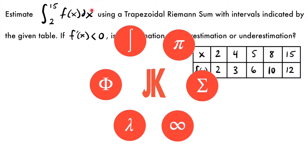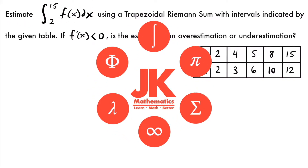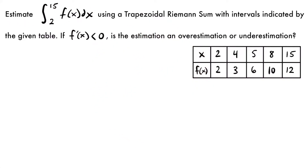We want to estimate the definite integral from 2 to 15 of a function f of x using a trapezoidal Riemann sum with intervals indicated by the given table. Additionally, we want to know that if the first derivative of the function is less than 0, is the estimation an overestimation or an underestimation?